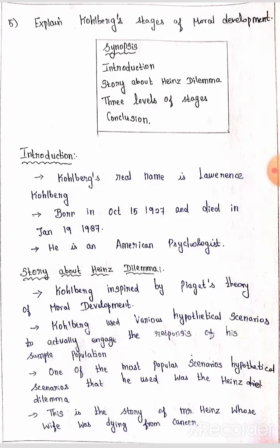In the introduction, we will talk about Kohlberg's real name. Kohlberg's real name is Lawrence Kohlberg. He was born on October 15, 1927, and died on January 19, 1987. He was an American psychologist, and Kohlberg's stage of moral development depends on the Heinz dilemma story. Kohlberg was inspired by Piaget's theory of moral development.